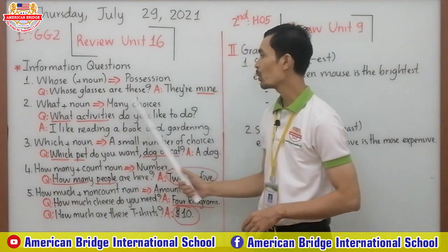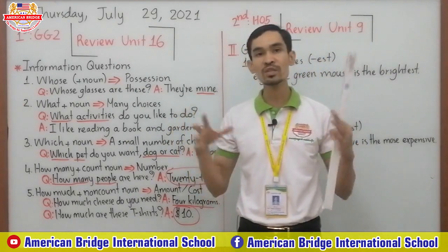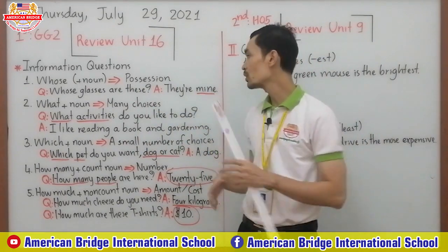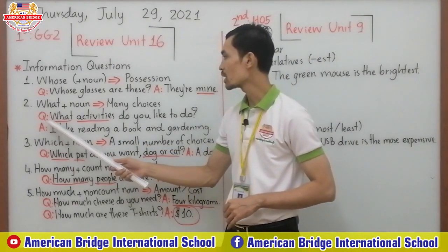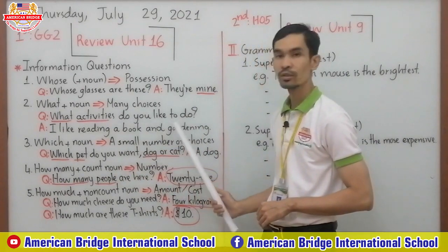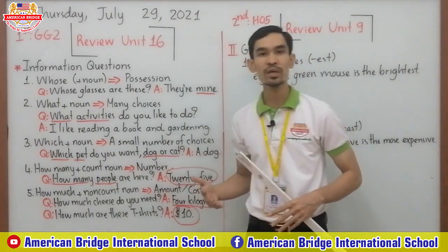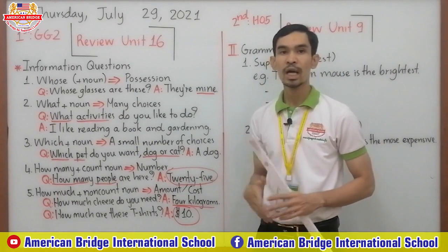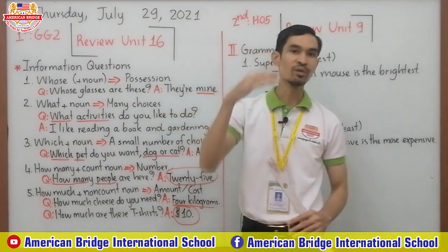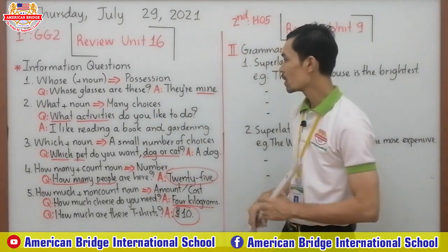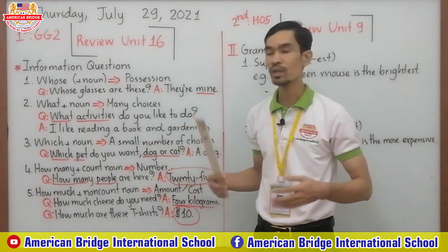Number two: what plus noun — to show many choices. When you want to ask about something that has a lot of choices, you use what plus noun. For example: 'What activities do you like to do?' 'I like reading a book and gardening' — or you can add more: cooking, gardening, and playing volleyball.